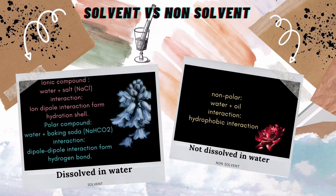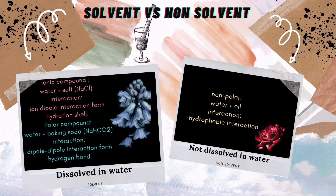To explain: a solvent is dissolved in water. There are two types of compounds in solvents. First, ionic compounds — when water and salt (sodium chloride) merge, it becomes ion-dipole interaction and forms a hydration shell. For polar compounds, when water and baking soda merge, it becomes dipole-dipole interaction and forms hydrogen bonds. For non-solvents, it does not dissolve in water — it is determined as non-polar. When water and oil merge, it becomes hydrophobic interaction.